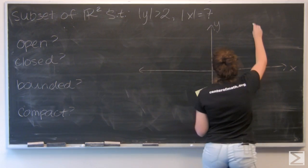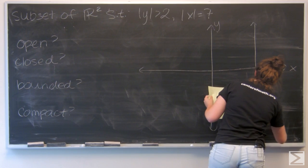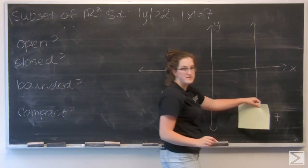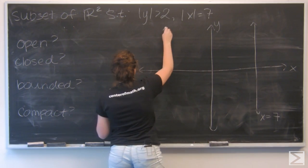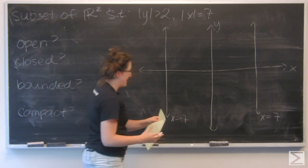Let's go and draw those two lines in. So here's x equals positive 7, and here's x equals negative 7.